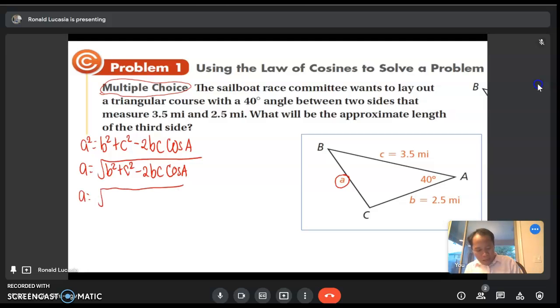So that's 2.5 squared plus 3.5 squared minus 2 times 2.5 times 3.5 times cosine 40 degrees.